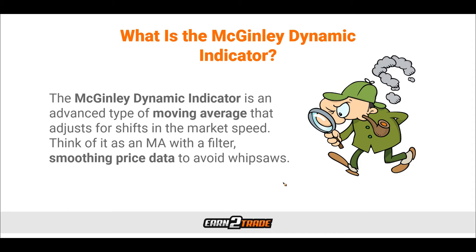This technical analysis tool was designed to solve the main issue with moving averages — their reliance on fixed time periods. Alternatively, to overcome the problem of varying market speeds and provide a more accurate reflection, here came the McGinley indicator. The McGinley Dynamic Indicator was invented by John R. McGinley, who was an editor of the Market Technicians Association's Journal of Technical Analysis.